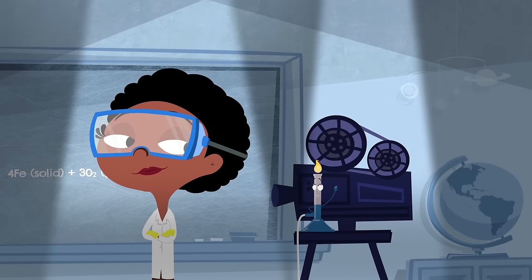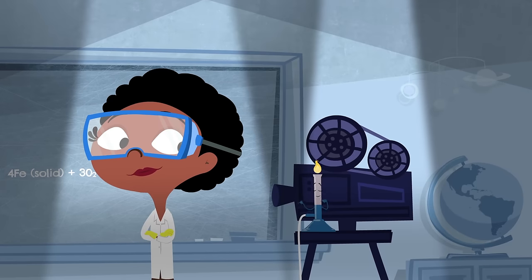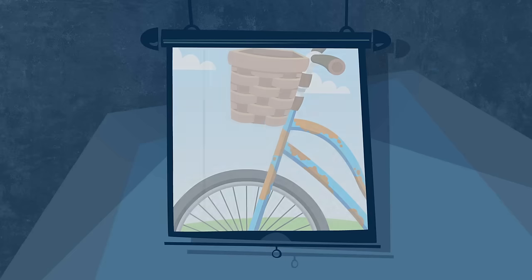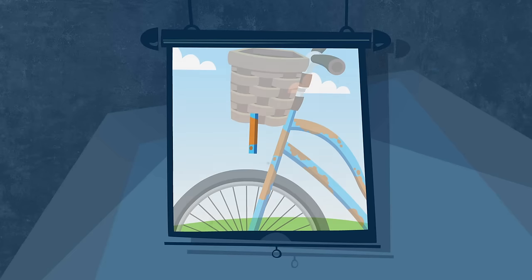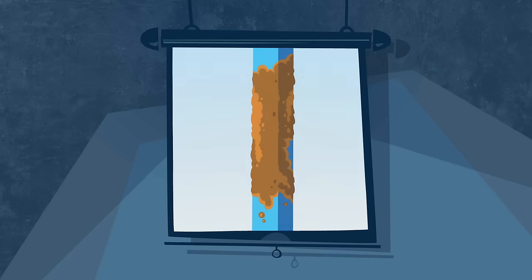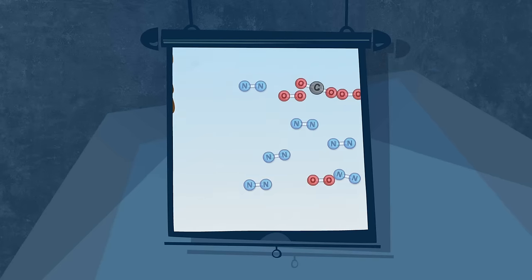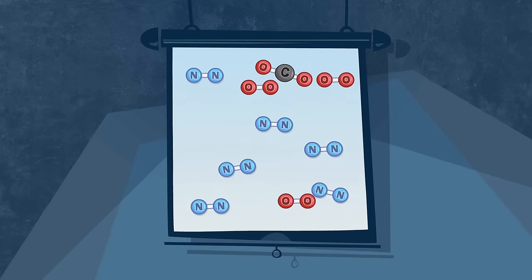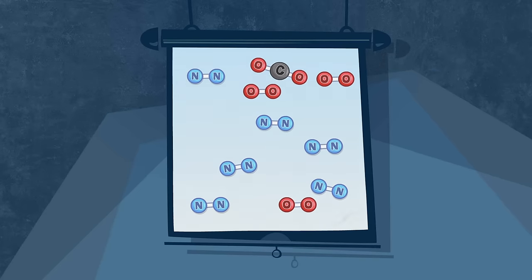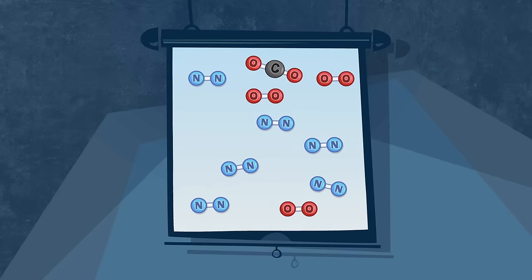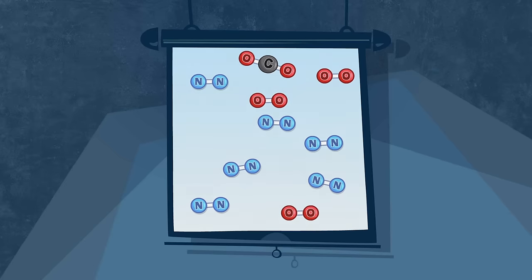Of course you can reinforce these concepts of conservation and rearrangement by having students clearly define the system being considered. A common source of confusion is that all the reactants may not be obvious or accounted for. Like earlier, when Amar was viewing the system as consisting of only the bicycle. Help students reason that the air is made up of molecules and that those molecules can be reactants, while also having them get in the habit of clearly defining the system they are considering.